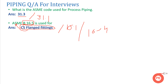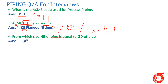From which pipe size is NPS equivalent to the OD of the pipe? From 14 inch (DN350), the NPS equals the OD of the pipe. 14 inches multiplied by 25.4 equals 356 mm, and the OD of a 14-inch pipe is also 356 mm. Below 14 inch, the OD does not match the NPS — for example, a DN100 pipe has an OD of 114 mm, which does not match.